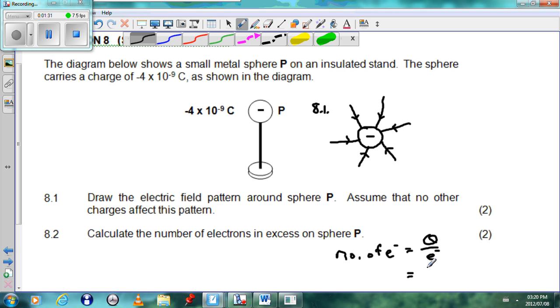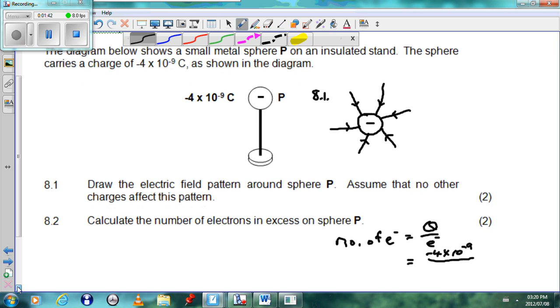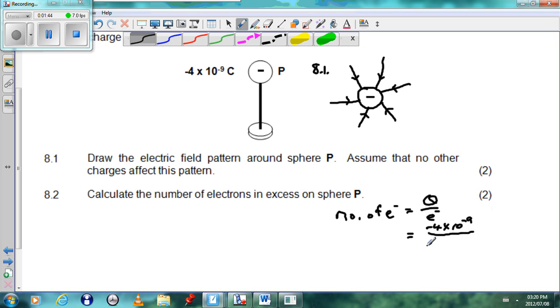So it will be minus 4 times 10 to the power minus 9 divided by the charge of one electron. And the charge of an electron will be given on the data sheet as a constant which will be minus 1.6 times 10 to the power minus 19.